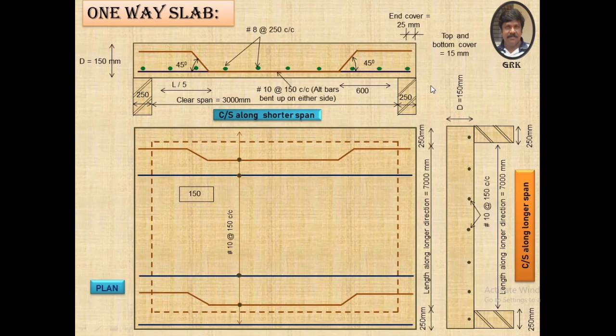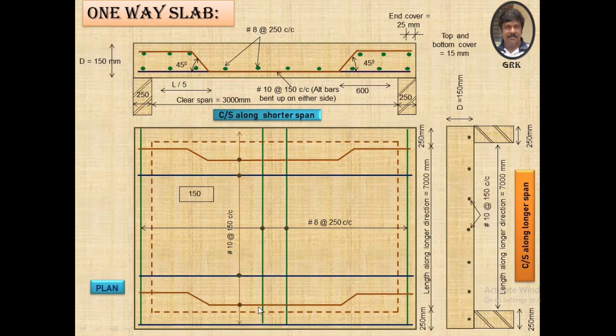The distribution steel is placed all along the length of the longer direction, perpendicular to the shorter direction. This distribution reinforcement is of 8 mm diameter placed at 250 mm center to center. The same type of bar has been provided in the cranked portion — the top portion on either side. These distribution steel bars are shown in green color, and in the cross section they appear as a horizontal line.